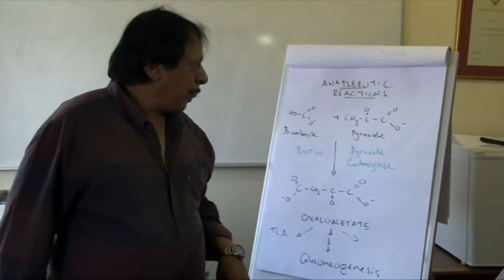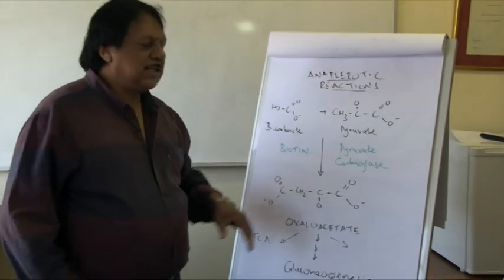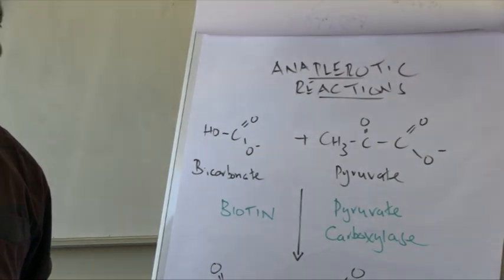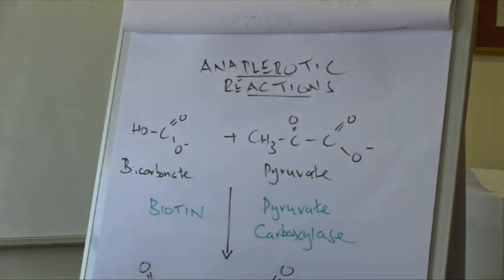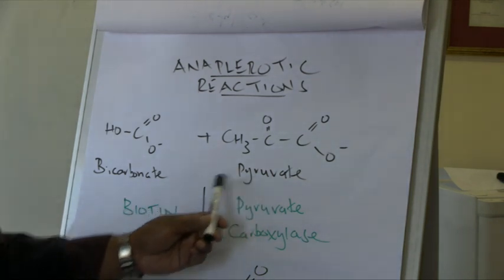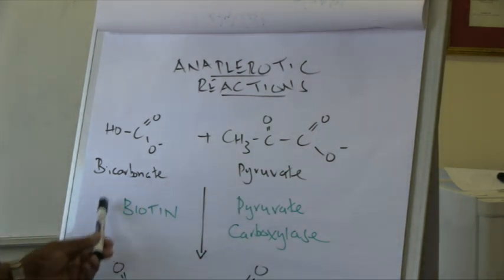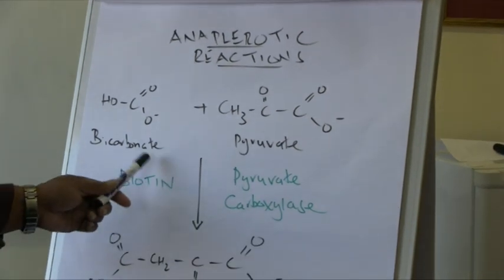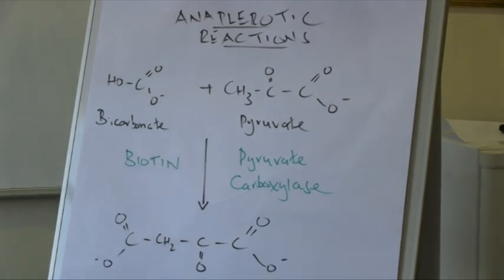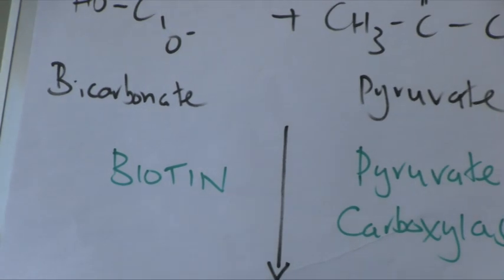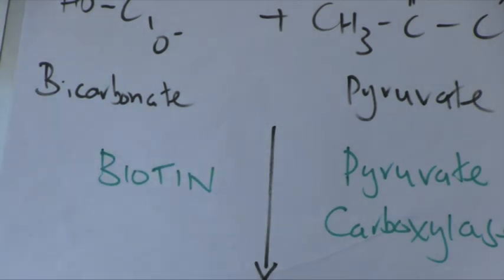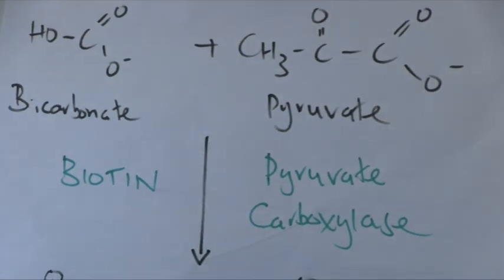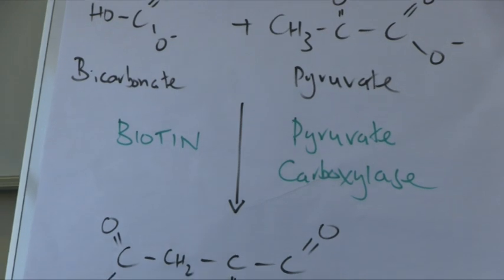One such anaplerotic reaction is catalyzed by the enzyme pyruvate carboxylase. This enzyme condenses bicarbonate and pyruvate to form the four-carbon compound oxaloacetate, which is a TCA cycle intermediate. Pyruvate carboxylase is dependent on the vitamin biotin. The only people who tend to have biotin deficiency are health fanatics who habitually eat raw eggs — raw eggs contain a protein called avidin, which irreversibly binds biotin, preventing this reaction from occurring.